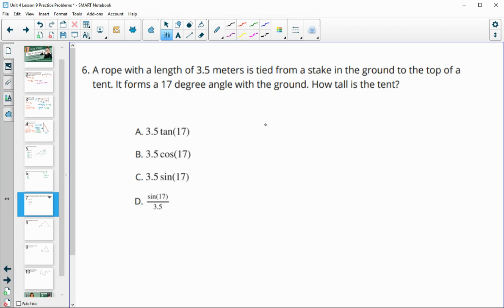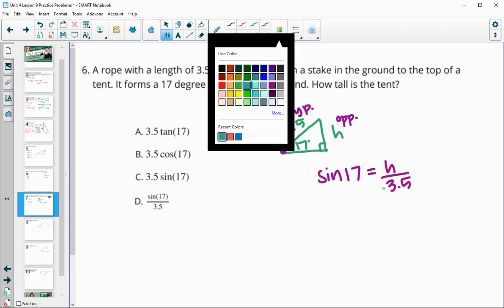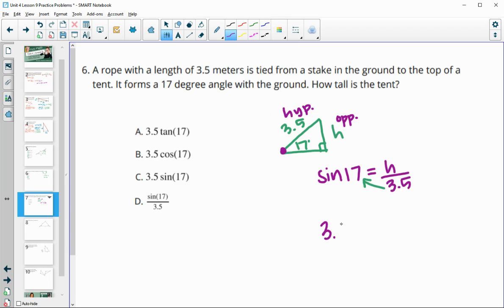Number six, a rope with a length of 3.5 meters is tied to a stake in the ground at a 17-degree angle. So we know this angle here is 17, the hypotenuse is 3.5, and we're looking for an expression for how tall this tent is. When we have this angle, the opposite side of that angle is this height and the 3.5 is the hypotenuse since it's across from the 90. So we can set up a sine function. Sine of 17 would equal the opposite over the hypotenuse. And then if we cross-multiplied here or multiplied that 3.5 up, we would get 3.5 times the sine of 17 would equal H. And that is option C.